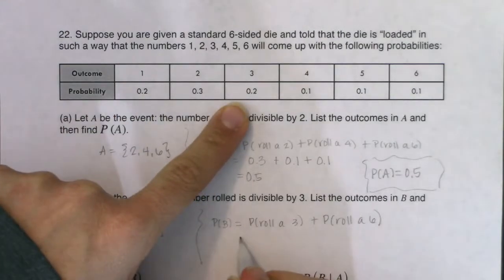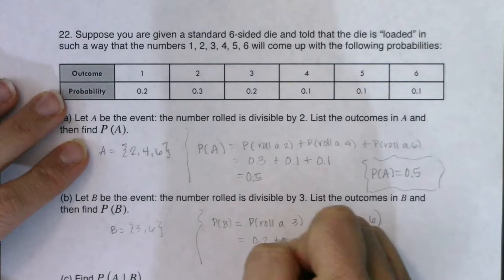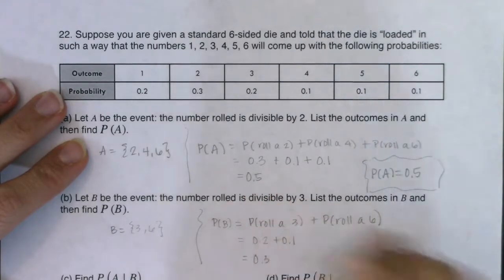so the probability that I roll a 2, that happens, not roll a 2, excuse me, roll a 3, that happens 20 percent of the time. And the probability that I roll a 6 happens 10 percent of the time for a total of 0.3.